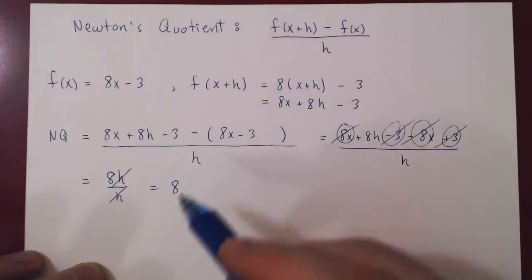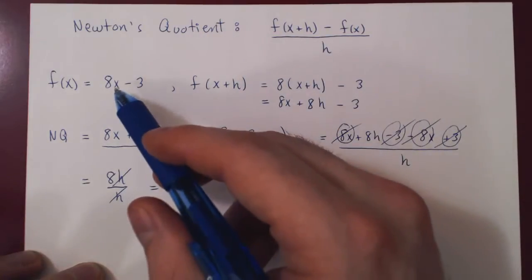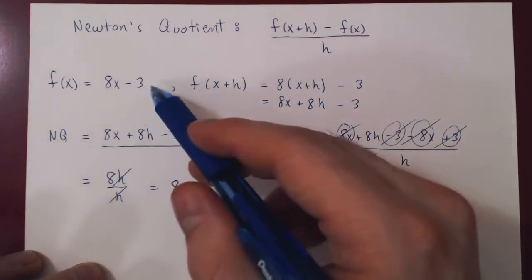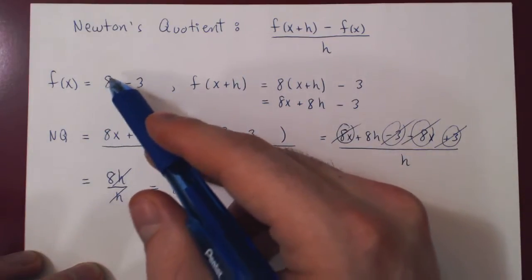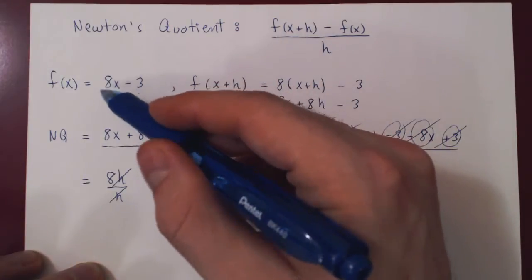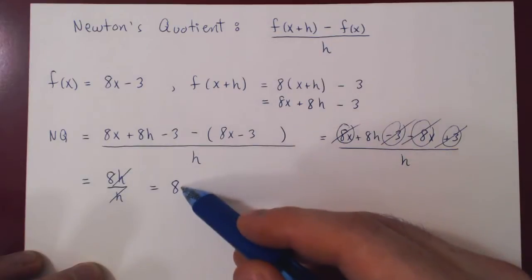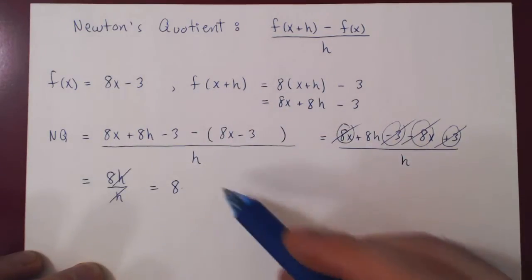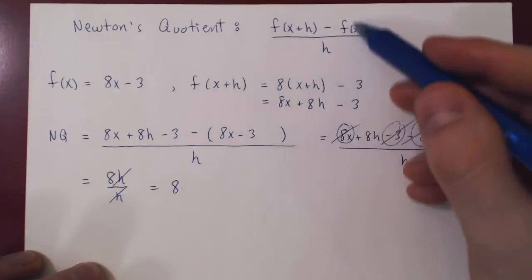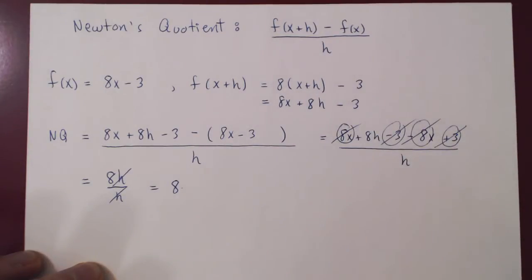So for the function 8x minus 3, Newton's quotient simplifies to 8. This is a glimpse of how this will be used later. f of x was a linear function — simply the line y equals 8x minus 3 — and the slope of that line was 8. Newton's quotient returned the slope of the line. This is not an accident, and this is how you will obtain the slope of any function, which will be called the derivative.